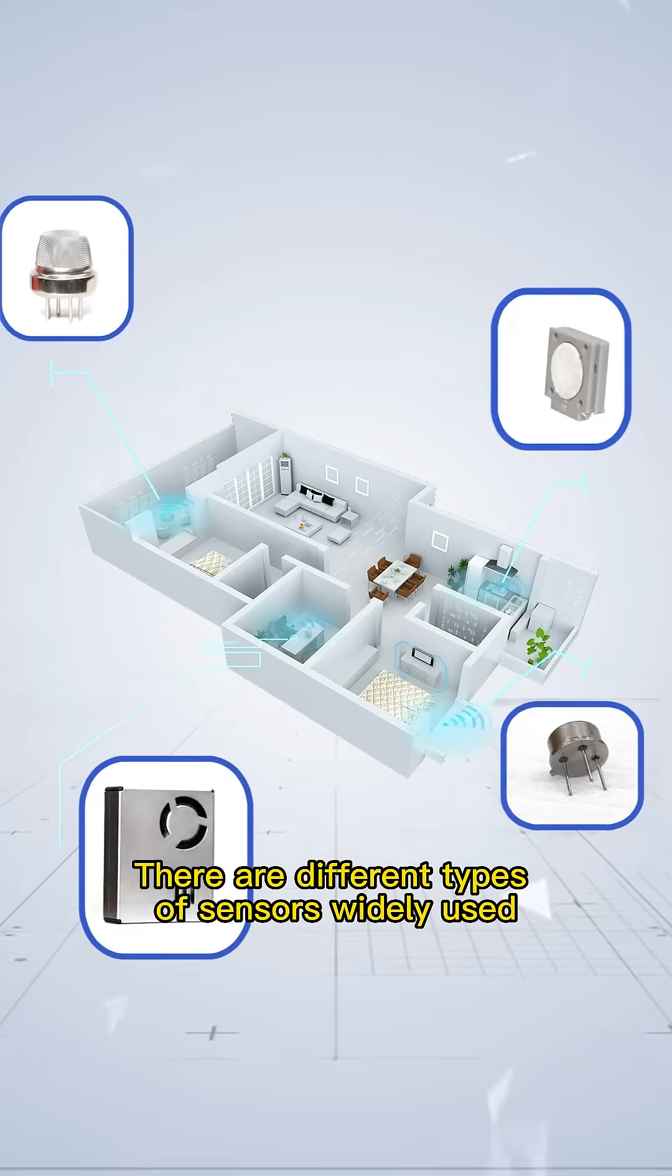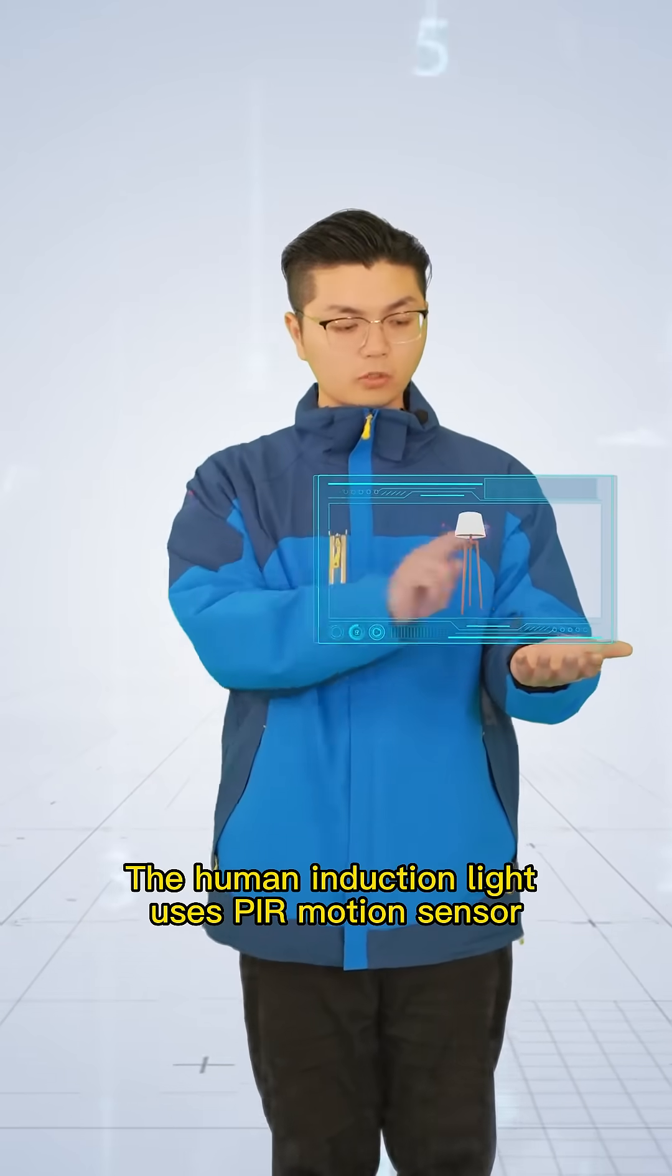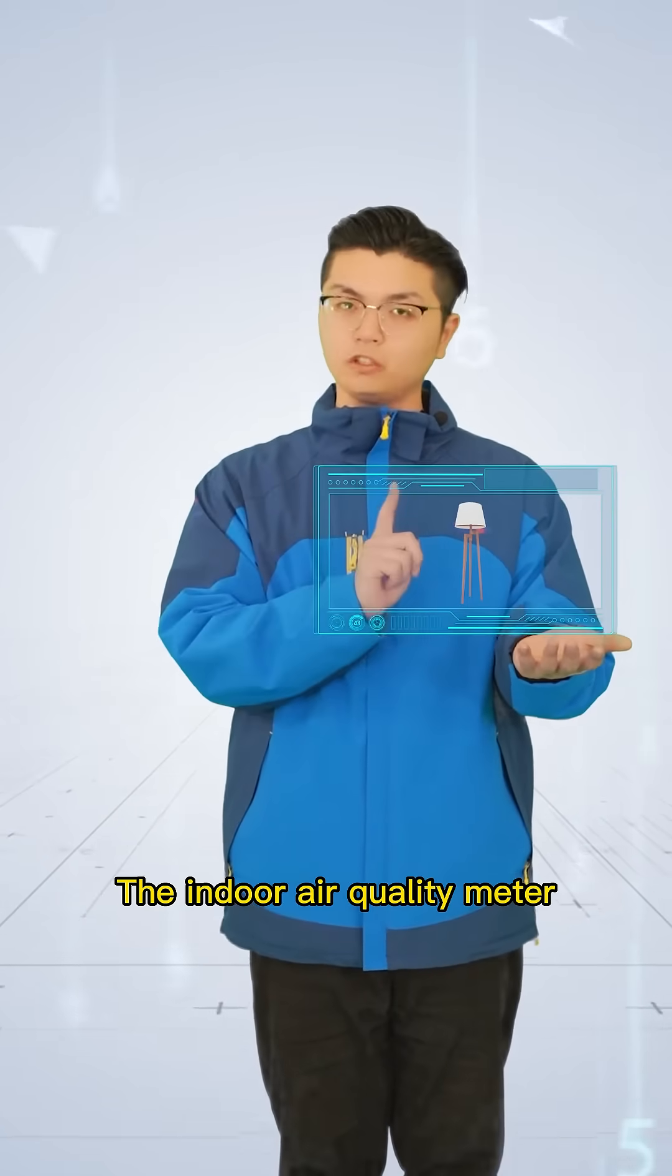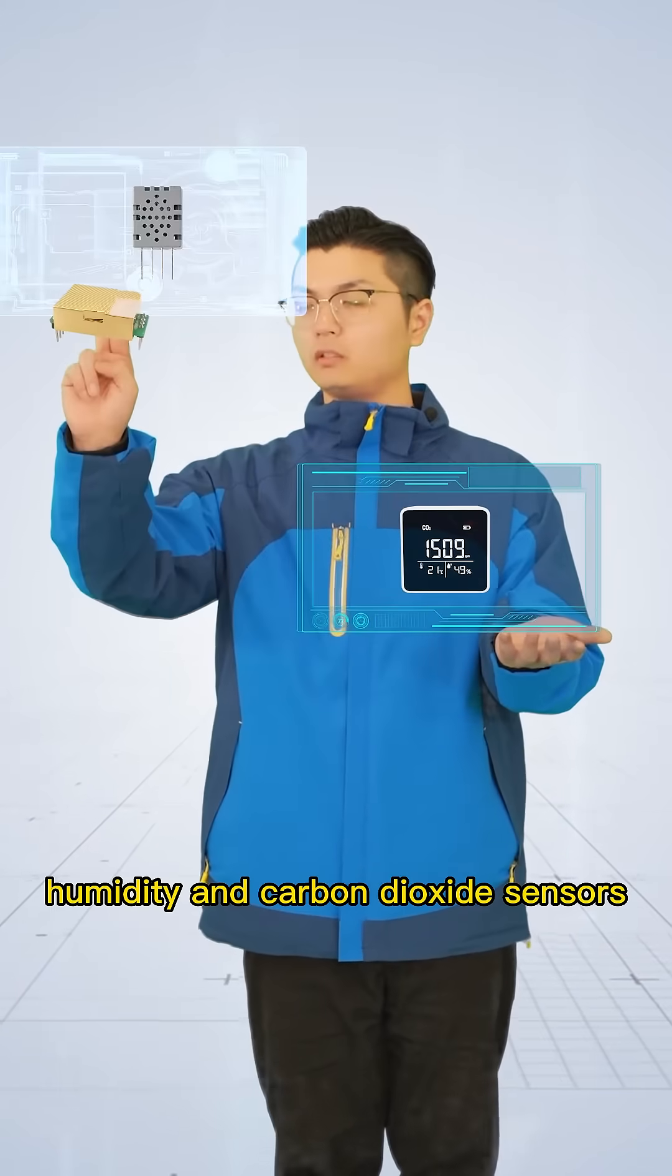There are different types of sensors widely used in social life. For example, the human induction light uses PIR motion sensor. The indoor air quality meter is equipped with temperature, humidity, and carbon dioxide sensors.